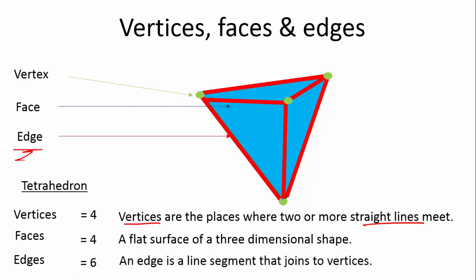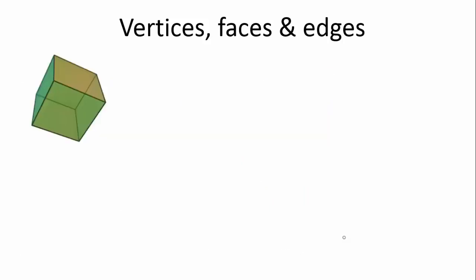And an edge is a line segment that joins two vertices — T-W-O. Okay, let's have a look at our cube. How many vertices does a cube have? How many faces does a cube have? And how many edges does a cube have?